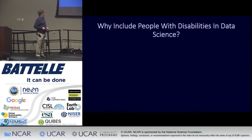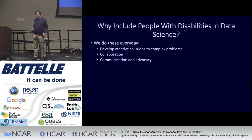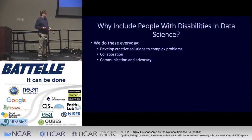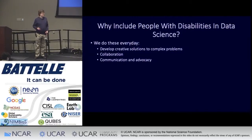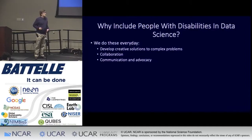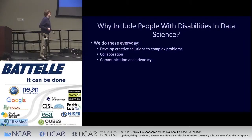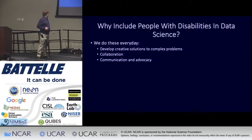So why should we do this? First of all, because people with disabilities are an asset — you want us. When you look at what recruiters for training programs and people hiring in this field are looking for, they want creative solutions to complex problems, they want collaborators, they want people who can communicate and advocate effectively. This is what we do every day. We come up with workarounds for complex problems. You have to be able to collaborate and communicate well — especially if you have a disability. You have to be a good communicator and advocate, and in an age when we all need more science advocacy across cultural and community boundaries, we're good at that.